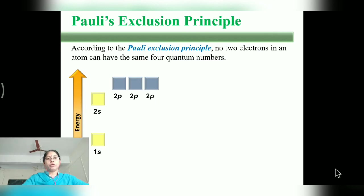According to Pauli's Exclusion Principle, no two electrons in an atom can have the same set of quantum numbers.